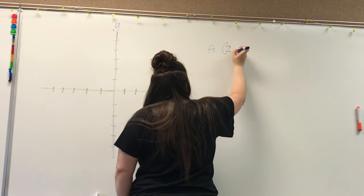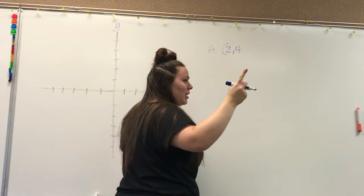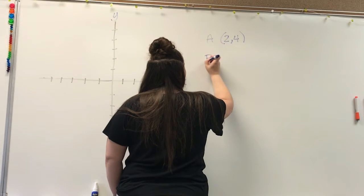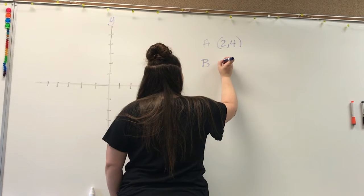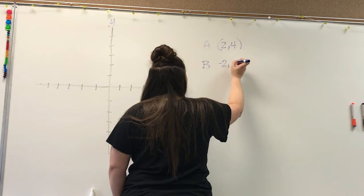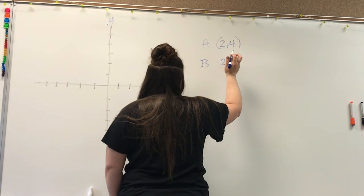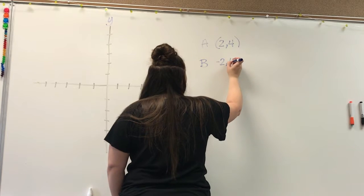So let's find point A, which is 2 comma 4, and this is just made up in my head, this isn't in the book. And then point B, which is negative 2 comma 4.